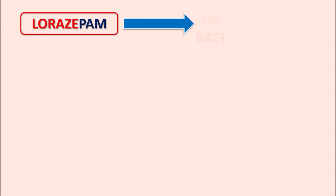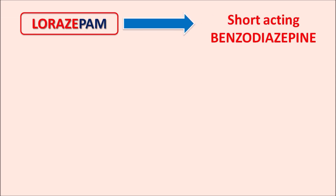Today we are going to discuss lorazepam. The suffix '-pam' indicates this drug belongs to the category of benzodiazepines. Lorazepam is a short-acting benzodiazepine, working for a duration of 12 to 18 hours, giving it a short duration of action compared with other benzodiazepines. We can analyze the name of this drug with its suffix, prefix, as well as infix.